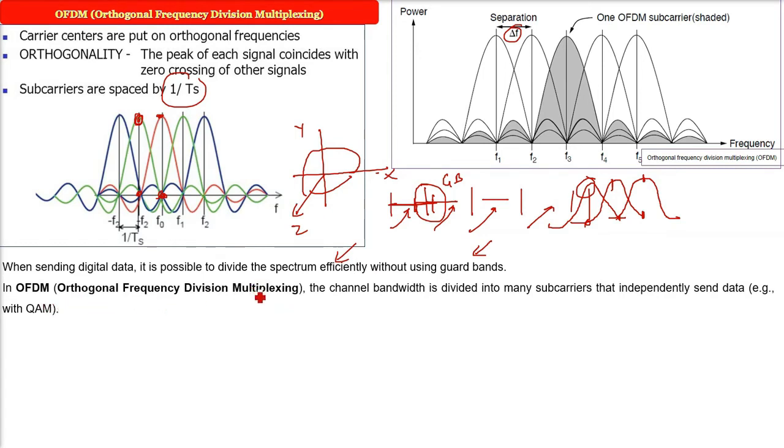In OFDM, orthogonal frequency division multiplexing, the channel bandwidth is divided into many carriers, sub-carriers. You see different colors here that independently send data. For example, you have already seen in quadrature amplitude modulation. This is how it is done. So let me tell you again, the orthogonality is the key.